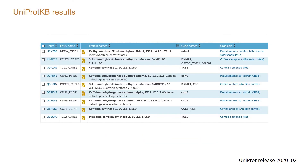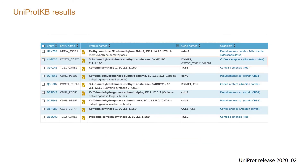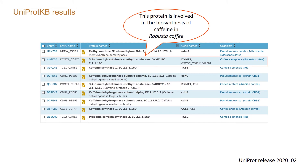We obtain a list of UniProt entries which contain the small molecule caffeine in the catalytic activity or cofactor sections. This protein, whose name is DXMT1, is involved in the biosynthesis of caffeine in Robusta coffee, as we can see by clicking on its accession number.